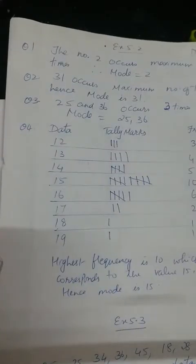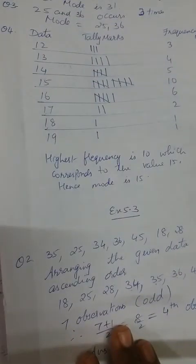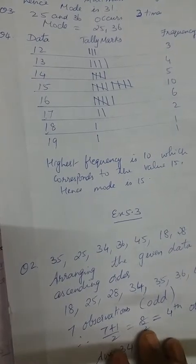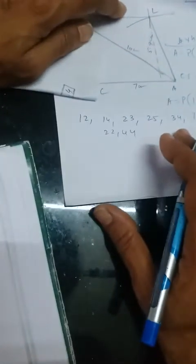We will start with exercise 5.3. The first one says find the median of the data: 12, 14, 23, 25, 34, 11, 42, 45, 32, 22, 44. So the first thing you have to do is arrange it.